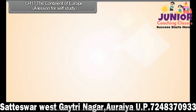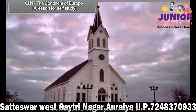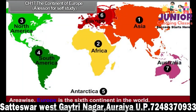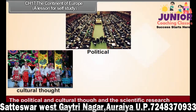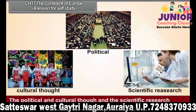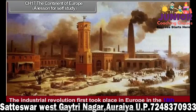Chapter 17: The Continent of Europe — A Lesson for Self-Study. Area-wise, Europe is the sixth continent in the world. It is located totally in the northern hemisphere. The political and cultural thought and the scientific research developed in Europe have influenced other countries in the world. The Industrial Revolution first took place in Europe in the 18th century.